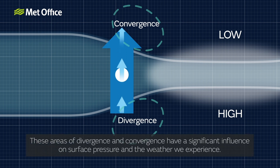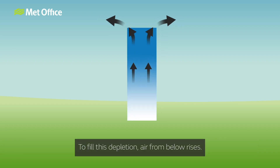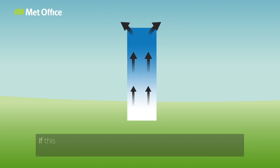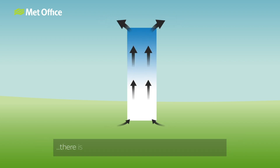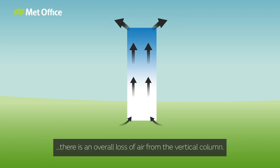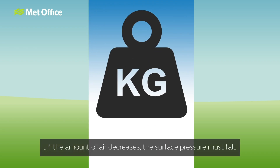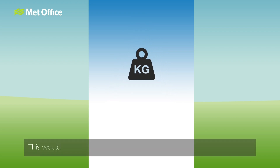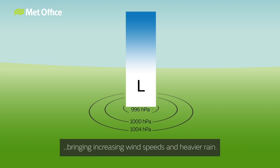These areas of divergence and convergence have a significant influence on surface pressure and the weather we experience. Diverging air at high levels means that the air in the column is being depleted. To fill this depletion, air from below rises. If this region of diverging winds is stronger than the corresponding converging surface winds, there is an overall loss of air from the vertical column. As pressure is the weight of air in a vertical column, if the amount of air decreases, the surface pressure must fall. This would cause an underlying surface low-pressure system to deepen, bringing increasing wind speeds and heavier rain.